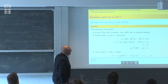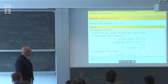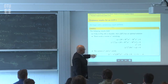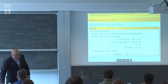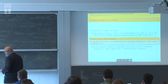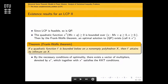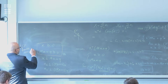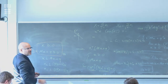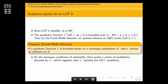The first result here is: if the LCP (Q, M) is feasible, then the QP has an optimal solution and there exists a U-star that satisfies this. LCP feasible implies there exists an X such that it's non-negative and MX plus Q is non-negative. Second, the quadratic function X-transpose times MX plus Q, greater than or equal to 0, is bounded over this feasible region.